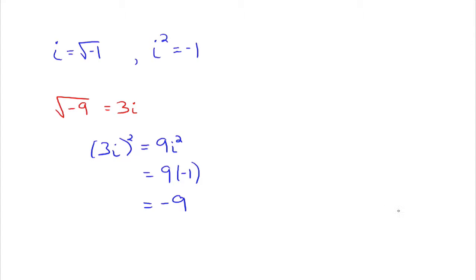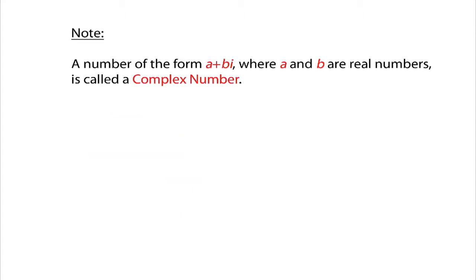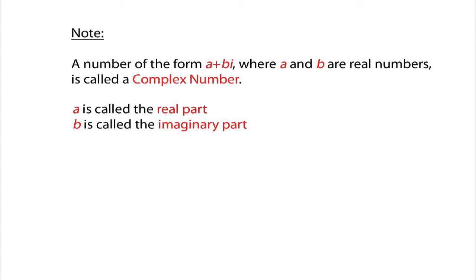That was all from the previous video. Now we want to expand this out to what are called complex numbers. A number of the form a plus bi — where you have one number with two parts — where a and b are real numbers and i is the imaginary unit, is called a complex number. Here, a is called the real part of the number and b is called the imaginary part of the number.